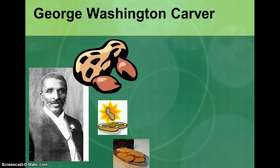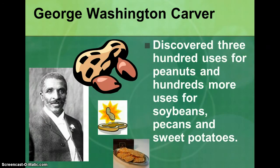George Washington Carver discovered 300 uses for peanuts and hundreds more uses for soybeans, pecans, and sweet potatoes.